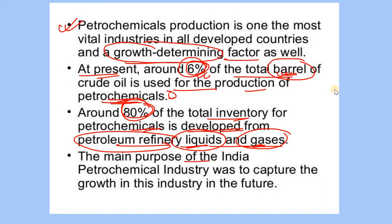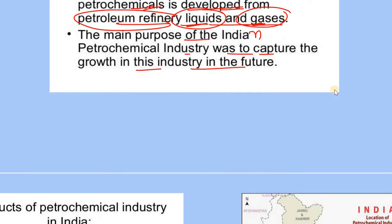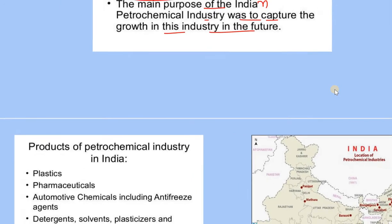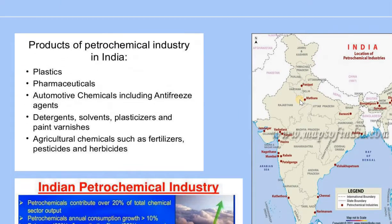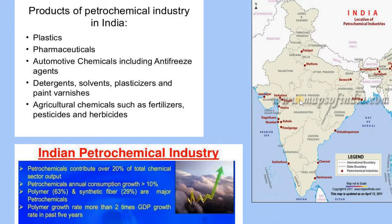The main purpose of the Indian petrochemical industry was to capture the growth in this industry in the future. Plastics are used for petrochemical products and development assets.